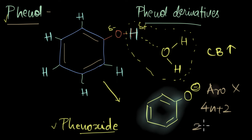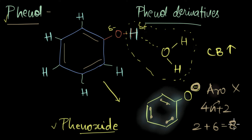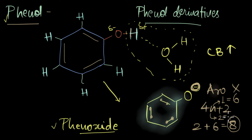We have 2 lone electrons here and 1, 2, 3, 4, 5, 6 pi electrons, giving us 8 electrons total. There is no value of n which gives us 8: putting n = 1 gives 4(1) + 2 = 6, and n = 2 gives 4(2) + 2 = 10. So 8 does not follow Hückel's rule — phenoxide ion is not aromatic, but it does show really great resonance.